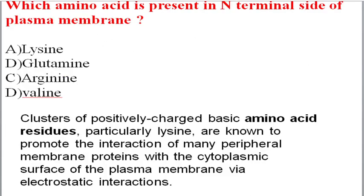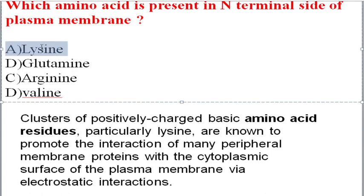The next question is about which amino acid is present in the N-terminal cytoplasmic region. A cluster of positively charged basic amino acid residues is involved in promoting the interaction of many peripheral membrane proteins with the cytoplasmic surface of the plasma membrane by electrostatic interaction. The correct option is lysine, as positively charged basic amino acid residues are involved at the N-terminal side of the plasma membrane.